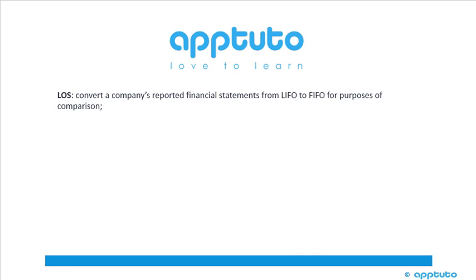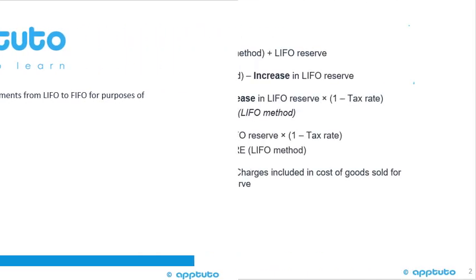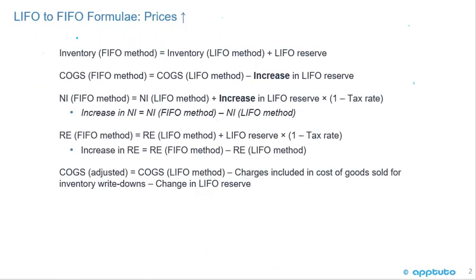This LOS is to convert a company's reported financial statements from LIFO to FIFO for purposes of comparison. We're going to look at the formulas when adjusting from LIFO to FIFO when the prices are rising.